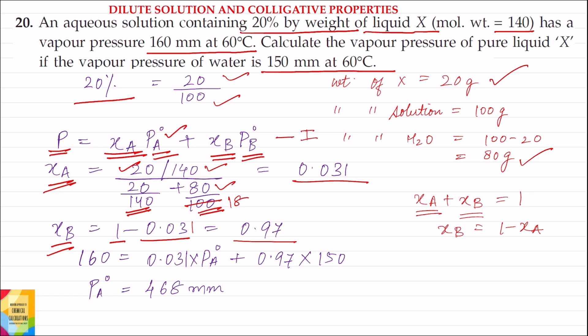Putting the values into equation 1: vapor pressure of the solution is 160 mm, mole fraction X_A equals 0.031 into P0_A, plus 0.97 into vapor pressure of pure water 150 mm. Solving, the vapor pressure of pure liquid X, P0_A, equals 468 mm.